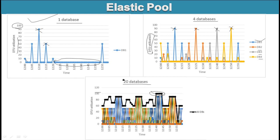If we use more databases within a single DTU utilization and it exceeds the limit, we can simply increase the limit slightly — for example to 120 instead of 100. This way we can handle 20 databases and use the resources at a very high level. This illustrates the benefit of Elastic Pool over using a single database.